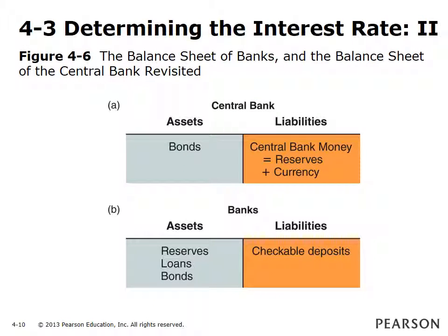We now extend our model to see how monetary policy works when money includes not only currency but checkable deposits too. Central banks control currency but not checkable deposits. Checkable deposits are held by commercial banks or private banks. Figure 4.6 shows the asset side of the central bank is the same as before. On the liability side, some of the money issued by central banks is held by private banks as reserves, along with currency held by the public. Central banks can directly influence the sum of currency and reserves.